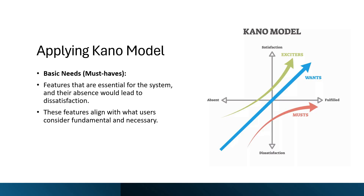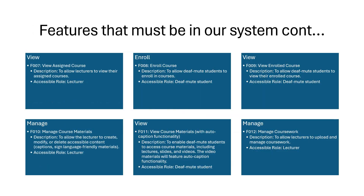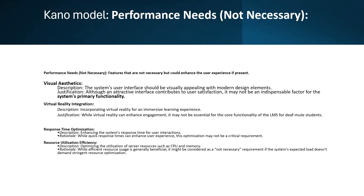The last thing I want to mention is the Kano model. The Kano model shows the features that must be present — essential features for the system whose absence would lead to dissatisfaction, as these align with what users consider fundamental and necessary. All features shown in the presentation slides are the ones that must be included. The other category represents features that are nice to have but okay if they don't exist. Thank you so much, Doctor — that's all for me.